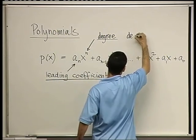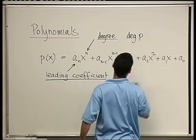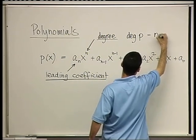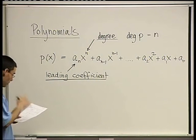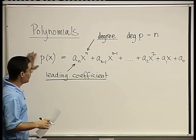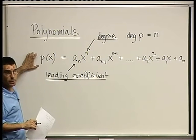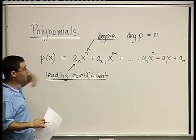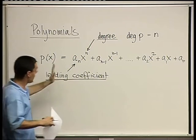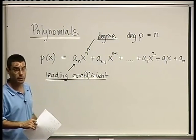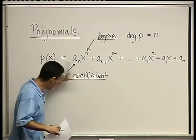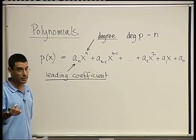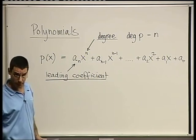And then the highest power of x that appears in the polynomial is called the degree of the polynomial. So this is the degree, and this is the leading coefficient. We'll write sometimes deg p, or deg p of x. Polynomials can, in this course we'll consider polynomials either over the field of real numbers, meaning that all the coefficients are real numbers, or over the field of complex numbers, meaning that all the coefficients are complex numbers, or in particular real numbers.